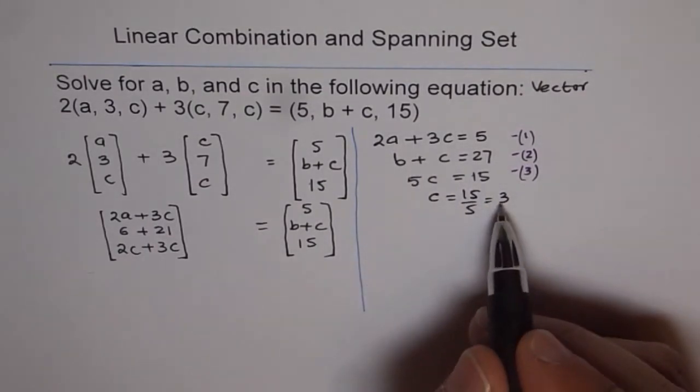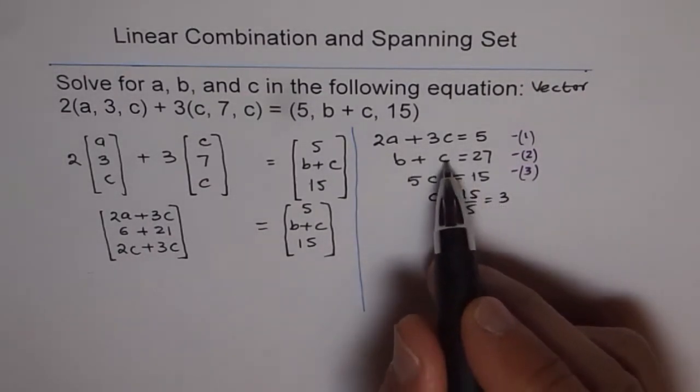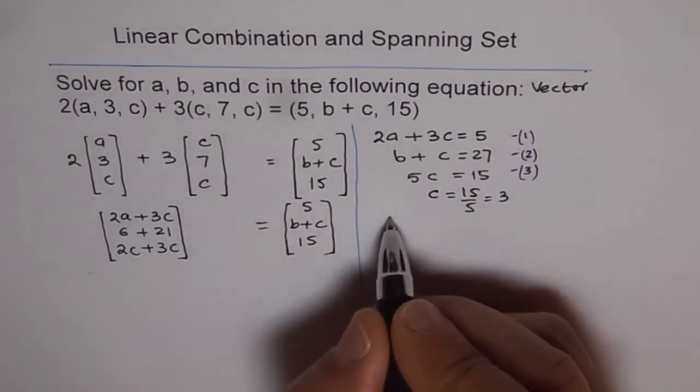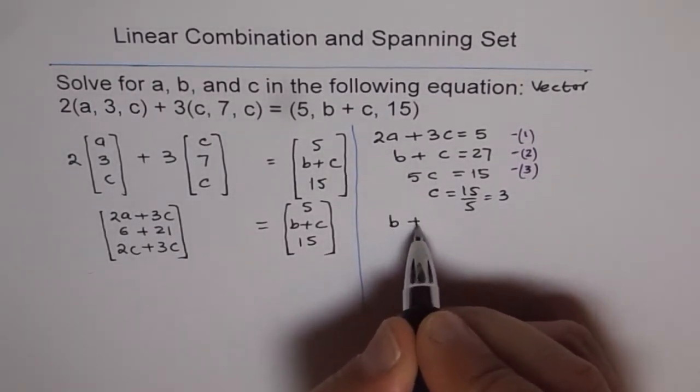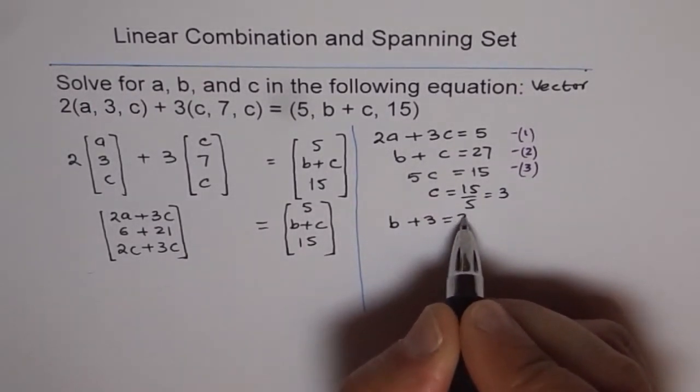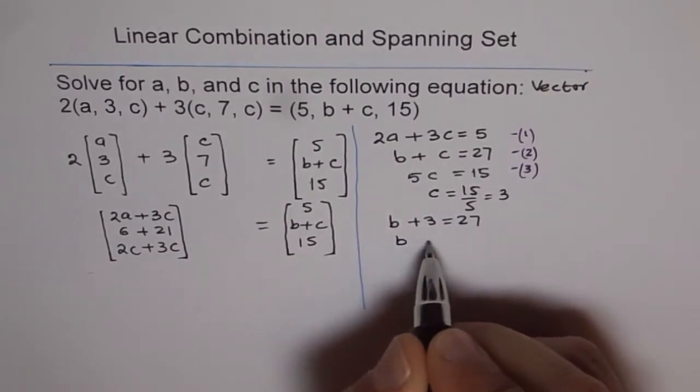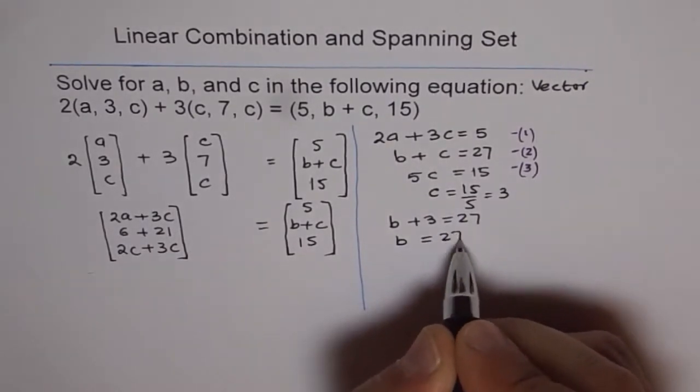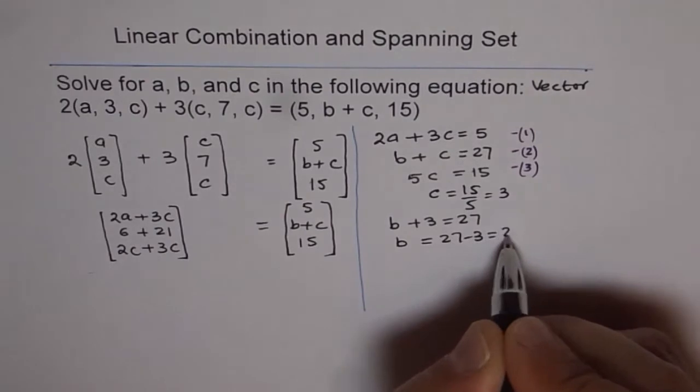To find b, we can plug in the value of 3 in c and find b. We get b plus 3 equals to 27 or b is equal to 27 minus 3, that is 24.